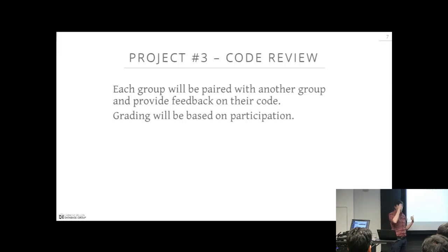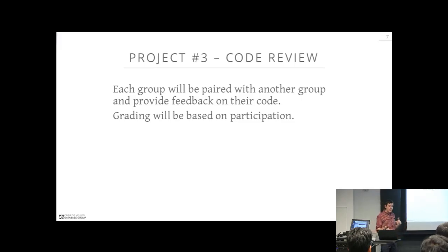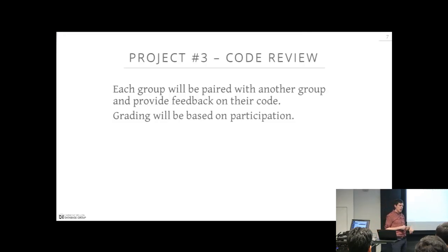When we get to the end of the semester and we actually want to start turning in our code, there are three additional steps. The first is that I'm going to require every group to get paired up with another group to do a code review. We'll set up a website through GitHub that leverages GitHub's issue tracking services to allow you to do a code review and provide feedback to another group about what they should or should not be doing to update or improve their implementation. The idea is to get you comfortable with modern coding practices.